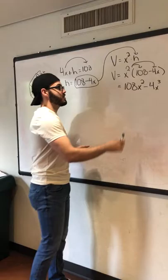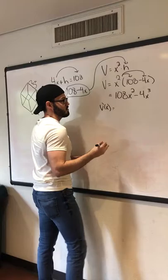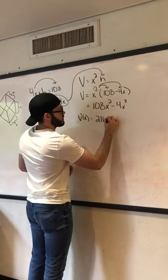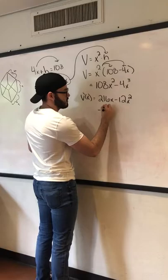The next thing we need to do is get the derivative of the volume equation, set it equal to 0 to get the critical numbers. So we have V prime of X equals 216X minus 12X squared. Now set it equal to 0.